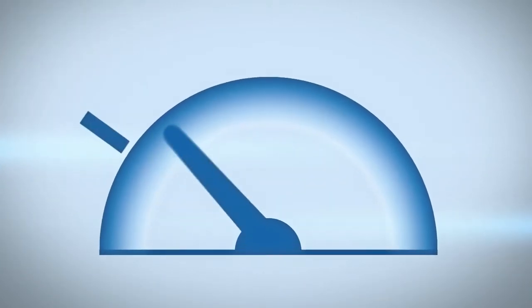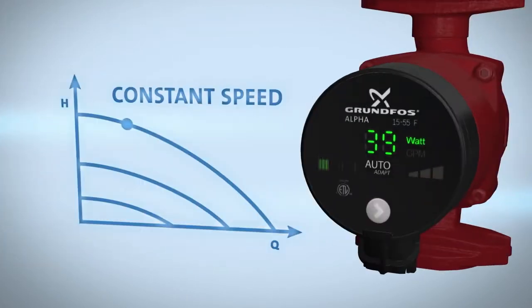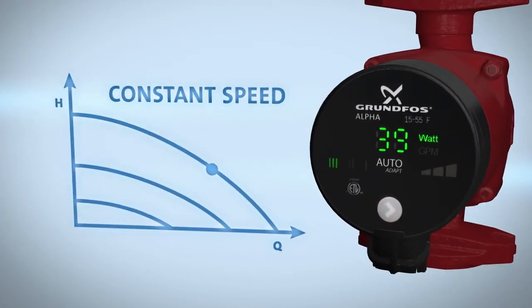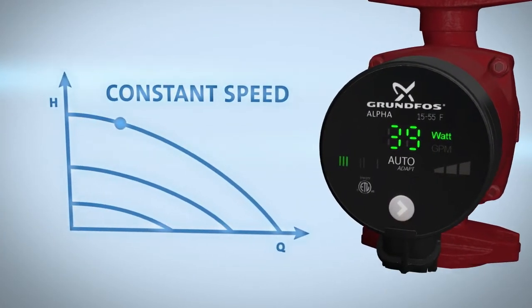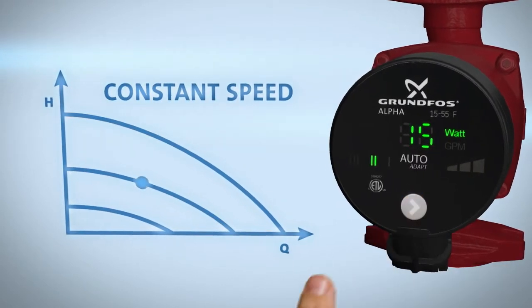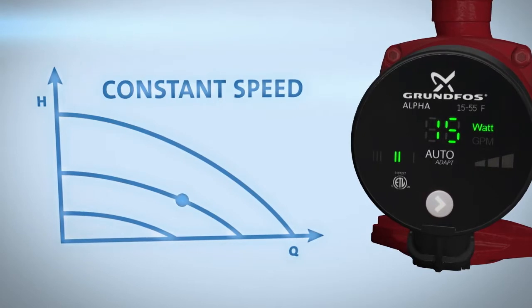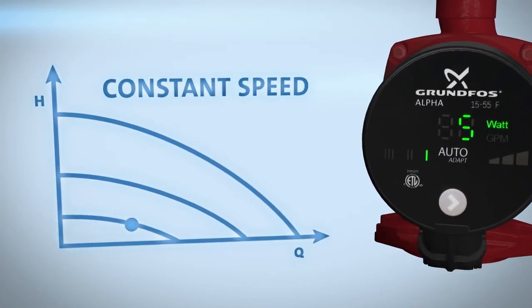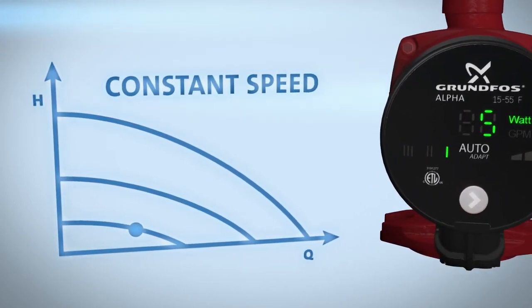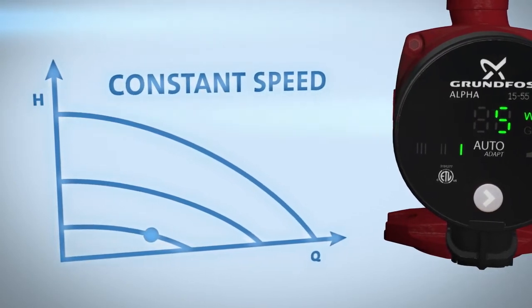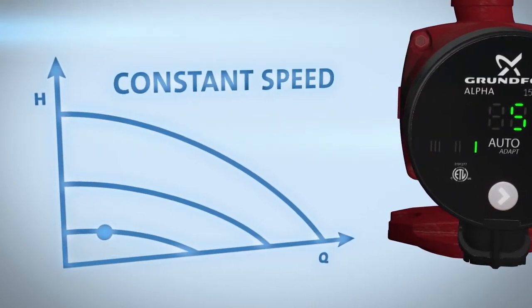Three speed modes offer even greater control. Use Speed 3 for large heating systems with constant loads and to vent the pump. Speed 2 works best for medium-sized systems with constant loads. Speed 1, the minimum speed setting, is ideal for small heating systems with constant loads and when adjusting bypass valves.